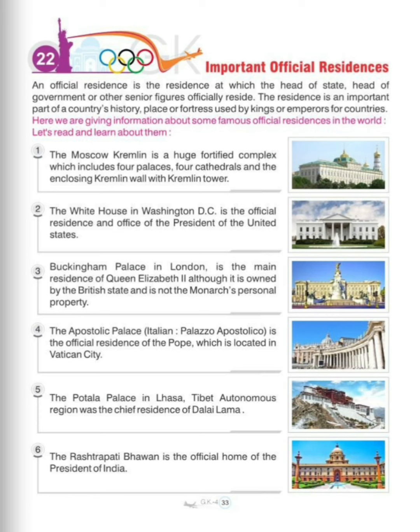Next is the White House. The White House in Washington DC is the official residence and office of the President of the United States. Next is Buckingham Palace in London, which is the main residence of Queen Elizabeth II, although it is owned by the British state and is not the monarch's personal property.